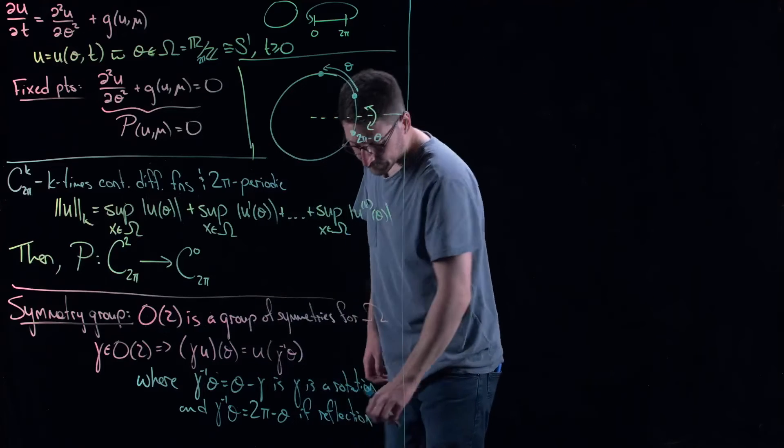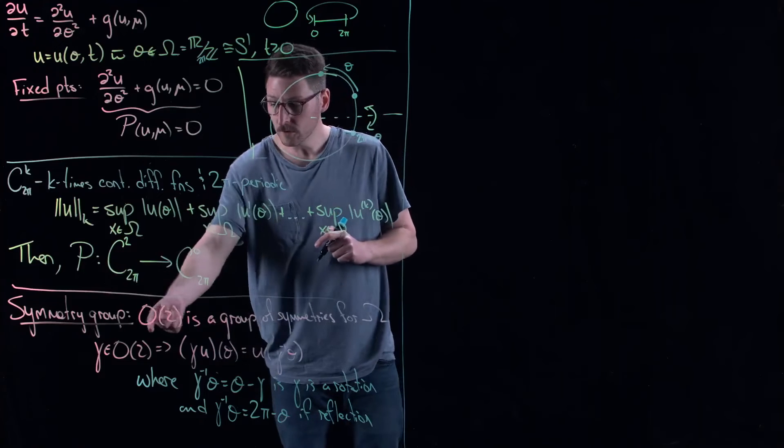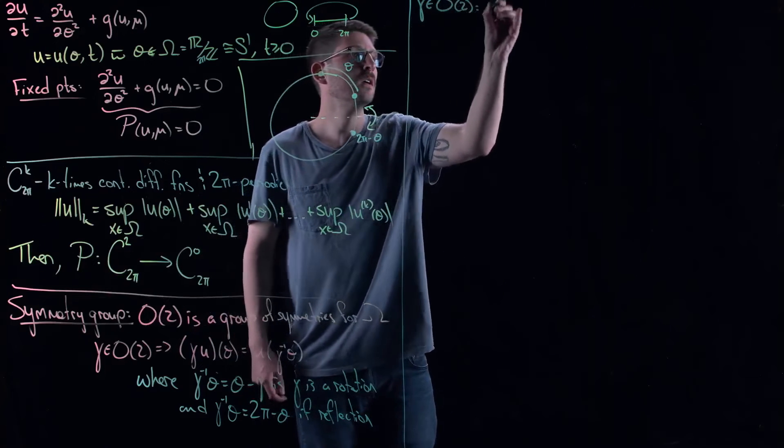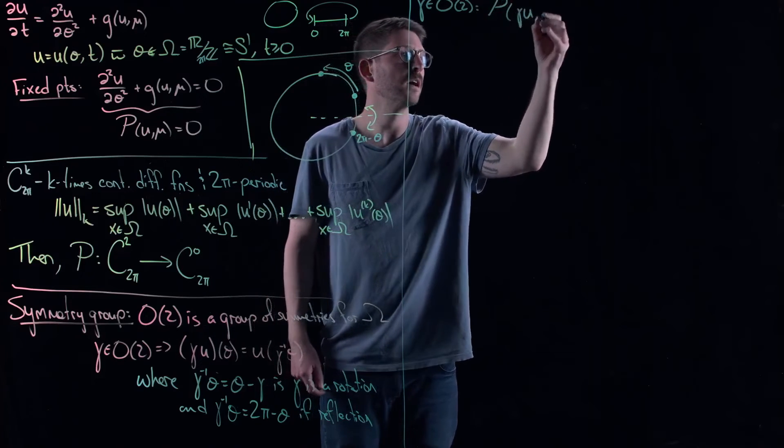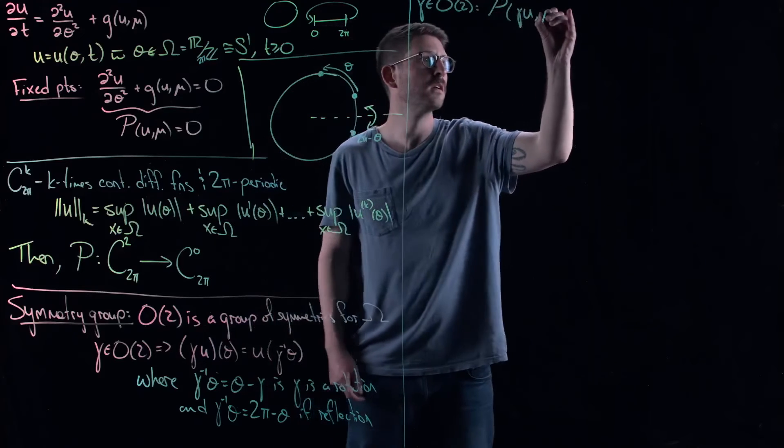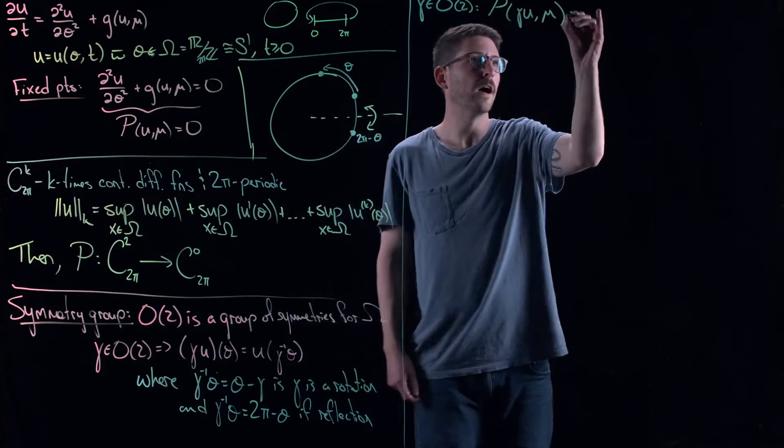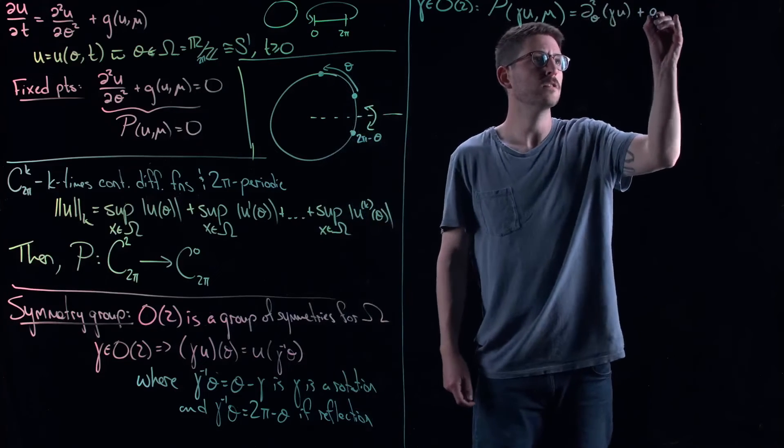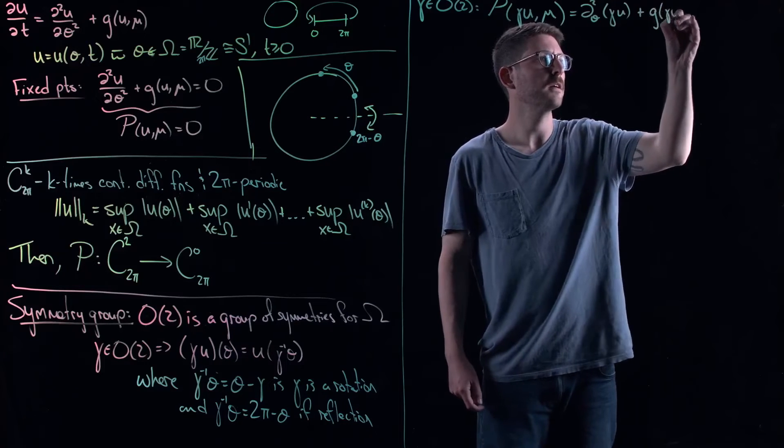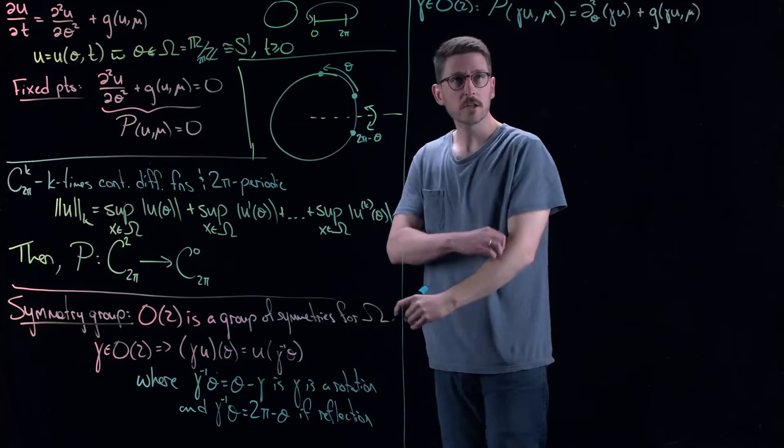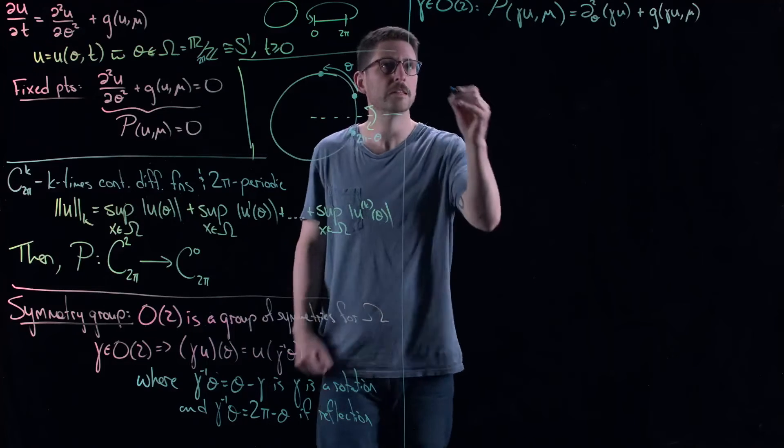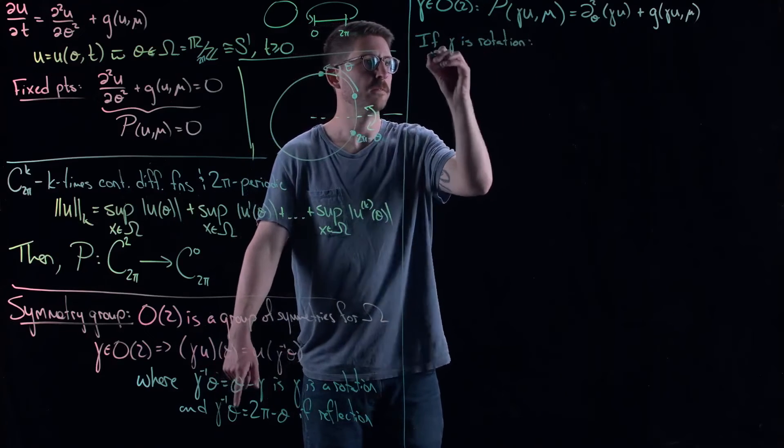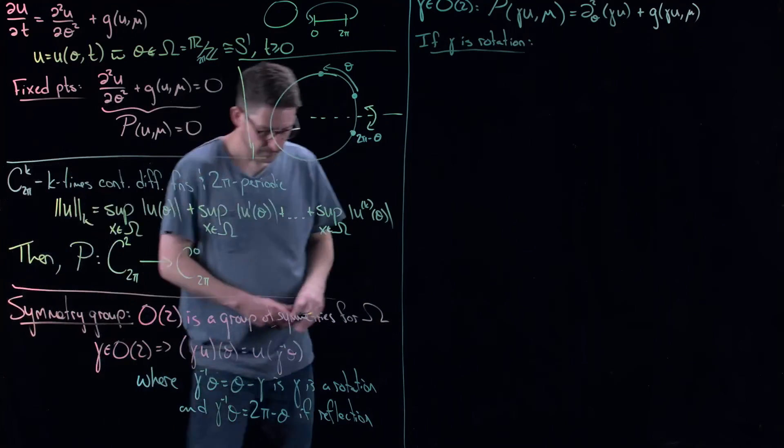Now the question is, is P O(2) equivariant? So let's see. If I take gamma in O(2), I have this. Do I have mu? Yes. This is the second derivative with respect to theta here. And then plus G of gamma u mu. And the question is, does gamma come out of this? Well, let's take a look. If gamma is a rotation, based on this representation right here. So if gamma is a rotation, let's see what happens.